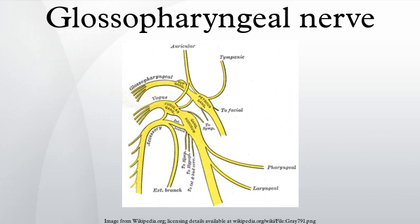Functions: There are a number of functions of the glossopharyngeal nerve. It receives general sensory fibers from the tonsils, the pharynx, the middle ear, and the posterior one-third of the tongue. It receives special sensory fibers from the posterior one-third of the tongue. It receives visceral sensory fibers from the carotid bodies and carotid sinus. It supplies parasympathetic fibers to the parotid gland via the otic ganglion. It supplies motor fibers to the stylopharyngeus muscle, the only motor component of this cranial nerve. It contributes to the pharyngeal plexus.